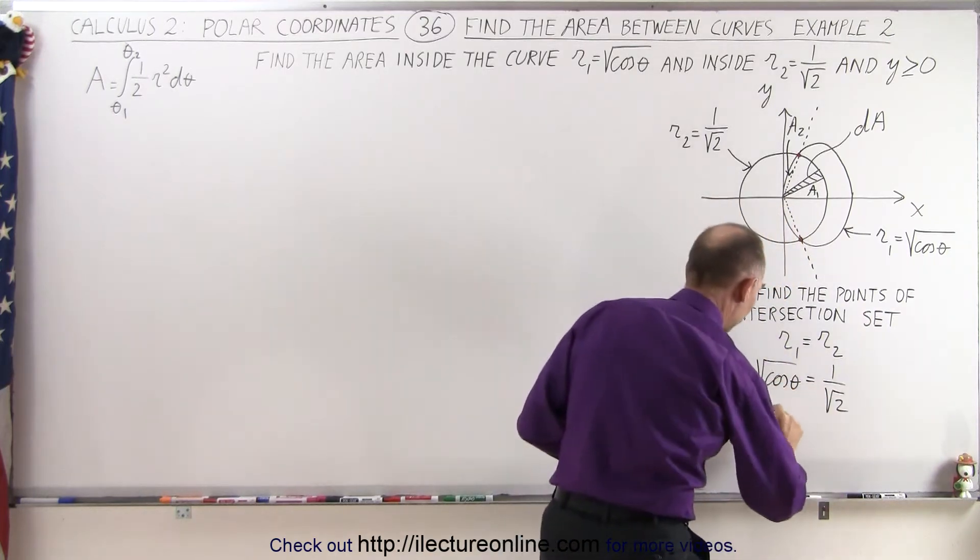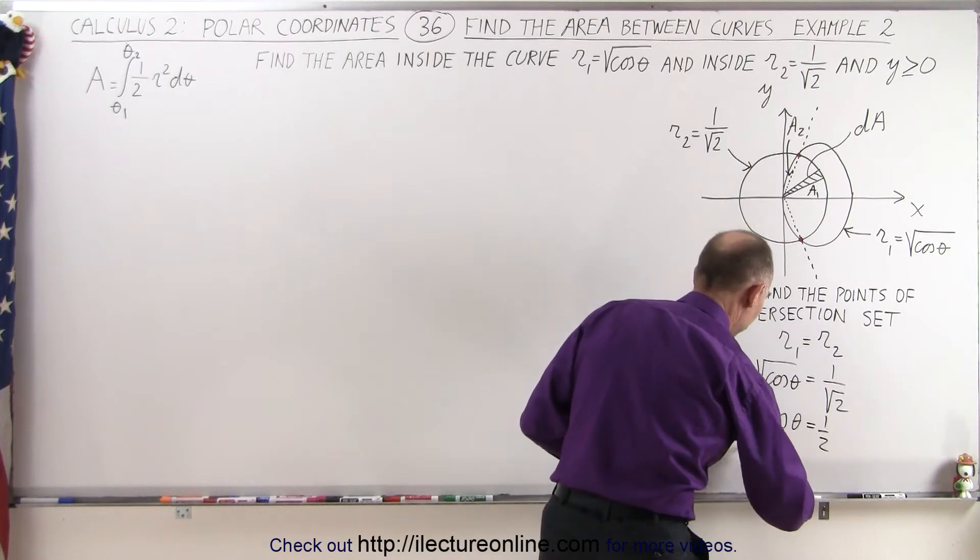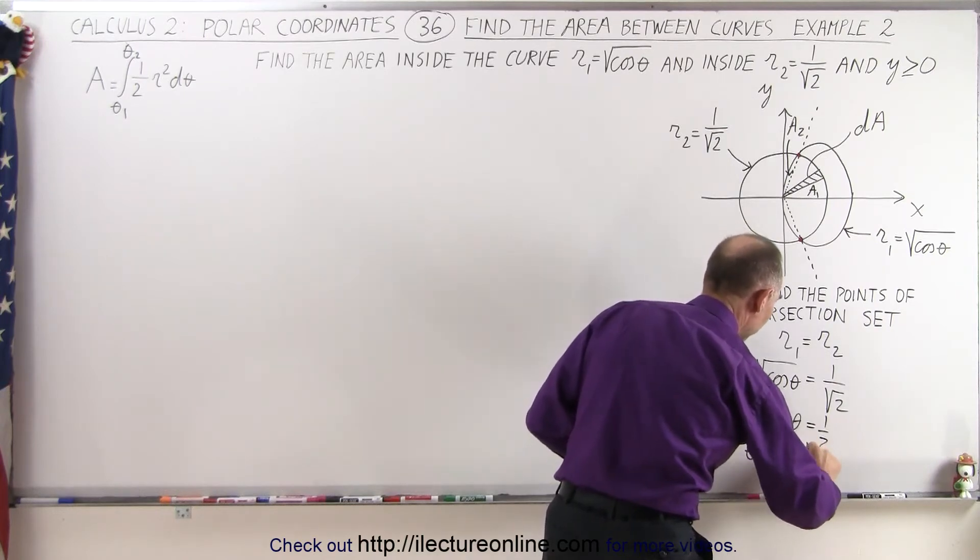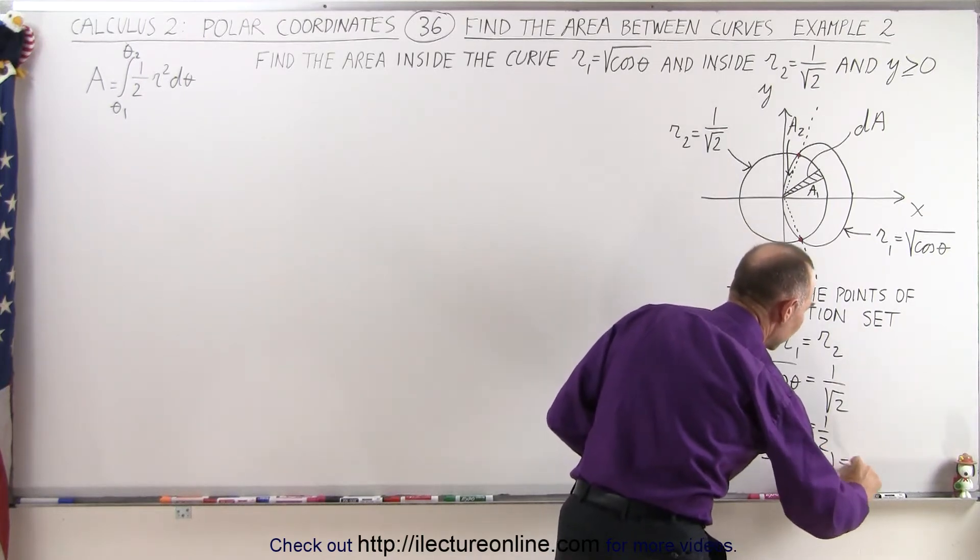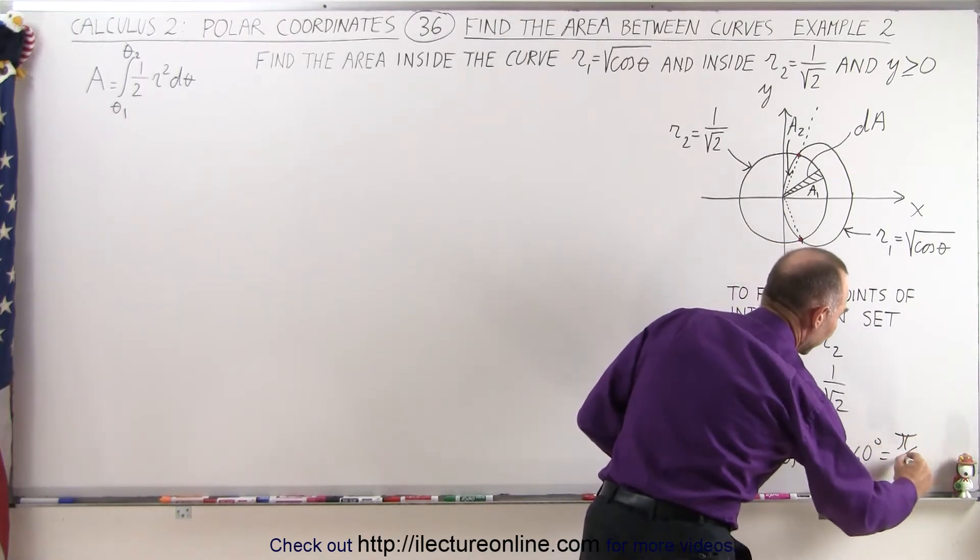If we square both sides, we get the cosine of theta is equal to 1 half, which means that theta is equal to the inverse cosine of 1 half, which means it's equal to 60 degrees, or pi divided by 3.